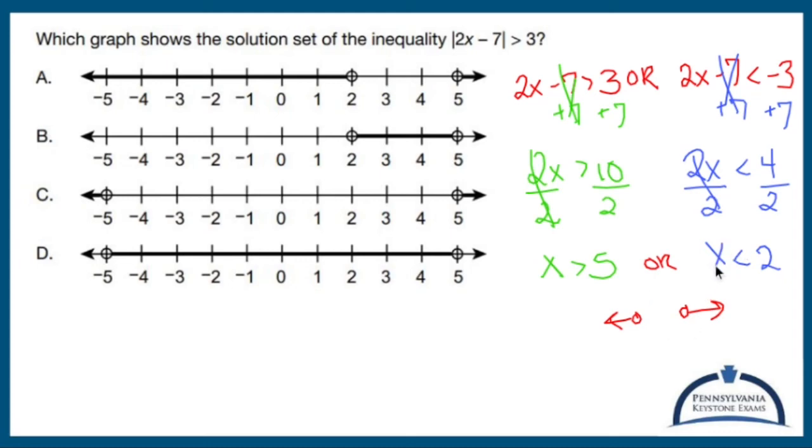So one of those inequalities is going to be x is less than 2, which means you put a circle at 2, go to the left. This is x is greater than 5, which means you put a circle at 5, go to the right. Neither of these fill in because you're not including it. So this seems to be the one that I want right here. This is everything in between. A is going to be my guy.